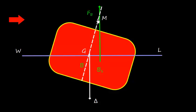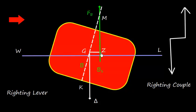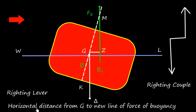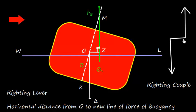The point where the centerline intersects the new line of force of buoyancy is called the metacenter (M). A righting lever GZ is formed — this is the horizontal distance from G to the new line of force of buoyancy, with a perpendicular dropped from G to that line at 90 degrees. This creates a righting couple or righting moment, which tries to bring the ship back to the upright condition.